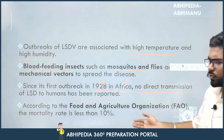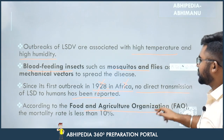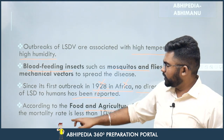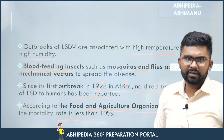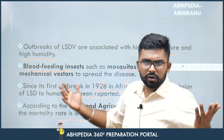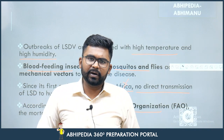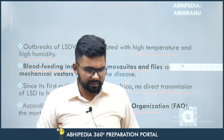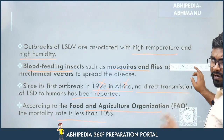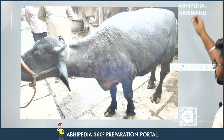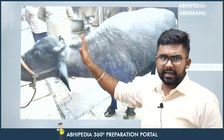According to FAO — the Food and Agriculture Organization — the mortality rate is less than 10%. That means if 100 cattle are sick, less than 10 of them will die. The probability of dying from this disease is less than 10%.